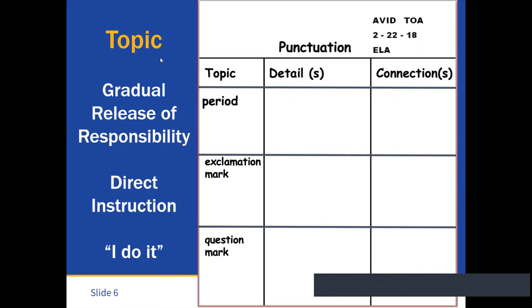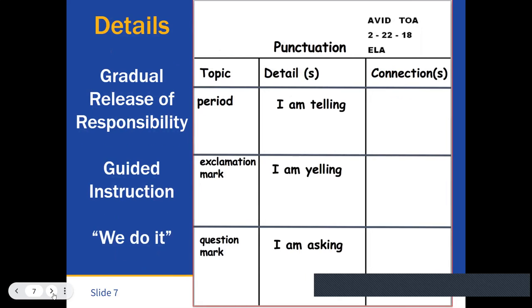So when we talk about the topic, we want to really reference the gradual release of responsibility and the direct instruction. This is the teacher's part where they do that 'I do.' The teacher would determine what the topic is. For this one, we're working on punctuation, and you can see that this is grade-level appropriate for anybody in kinder, first, second grade, and possibly even TK. We would talk about what a period is and then an exclamation mark and a question mark. So the teacher would identify the topic or the 'I do' for the teacher.